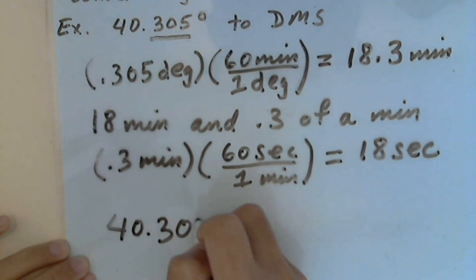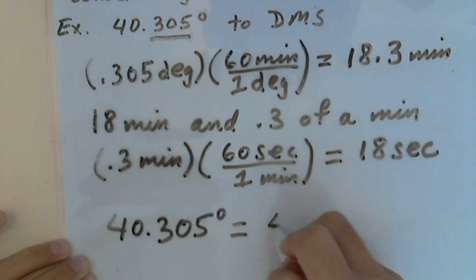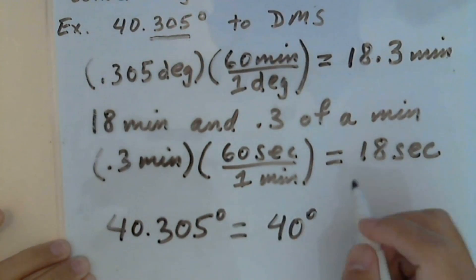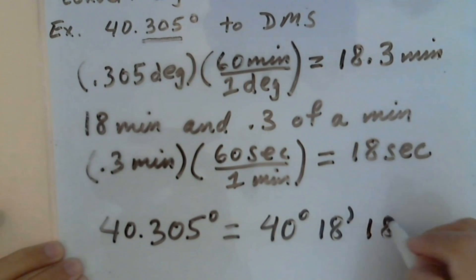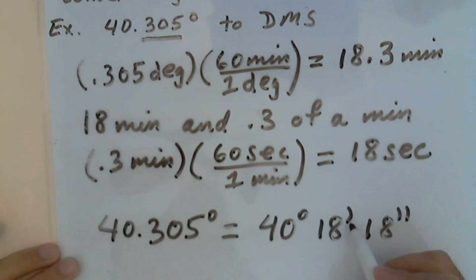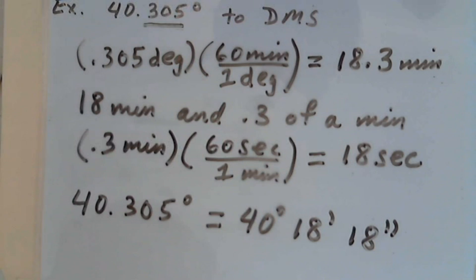Therefore, 40.305 degrees equals 40 degrees, 18 minutes, and 18 seconds. One apostrophe represents a minute, two apostrophes or double quotation represents a second. Thank you for watching my video.